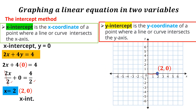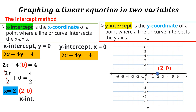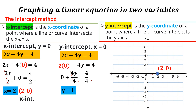Proceeding now to the y-intercept: the y-intercept is the y-coordinate of the point where a line or curve intersects the y-axis. Since we are done with the x-intercept by setting y to 0, this time, getting the y-intercept, x should be set to 0. The given is 2x plus 4y is equal to 4. Substituting x with 0 gives us 2 times 0 plus 4y is equal to 4, which simplifies to 0 plus 4y equals 4. Dividing both sides by 4, we get y equal to 1. Therefore, our y-coordinate of the point where the graph crosses the y-axis is 1, and the point is (0, 1) — that is the y-intercept.